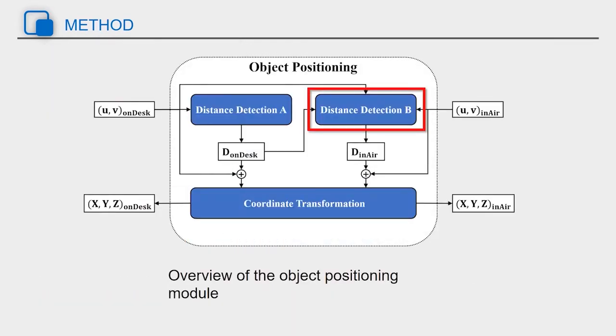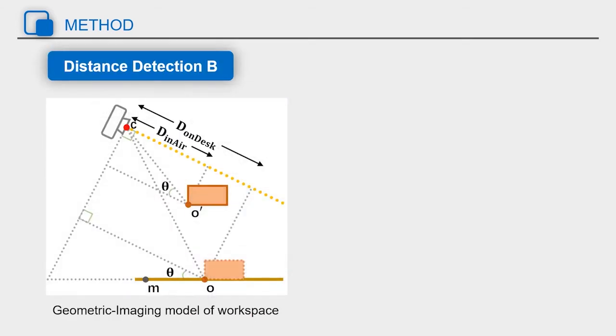After obtaining the distance of the object on the desk, using distance detection B, the information of the object on the desk can be used to solve the distance of the object in the air. To be specific, we respectively establish the object's optical imaging equations in two states.